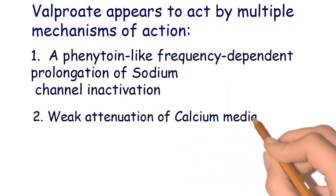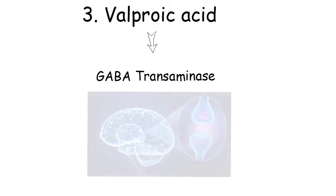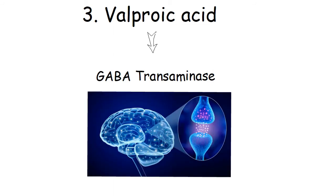Third, valproic acid inhibits GABA transaminase, which increases the concentration of GABA in the brain, which inhibits presynaptic and postsynaptic discharge.